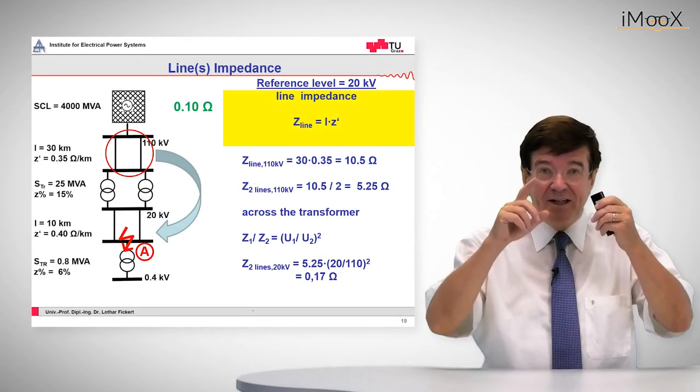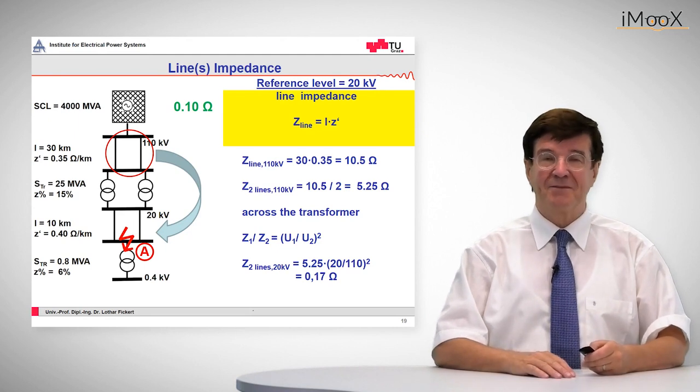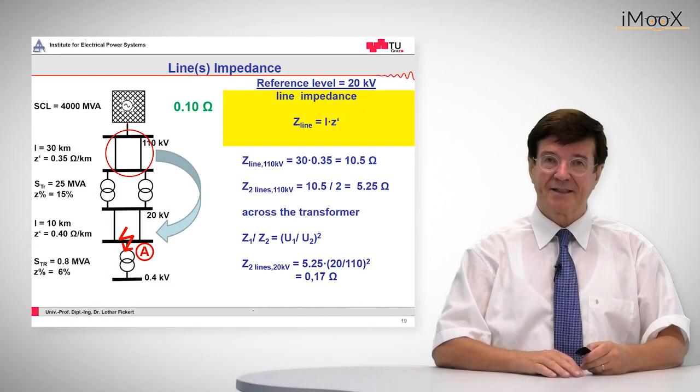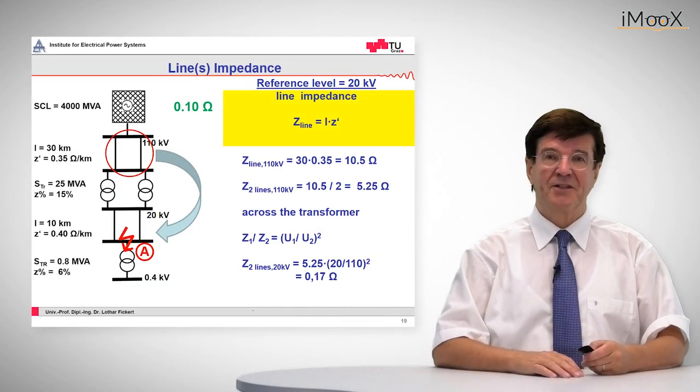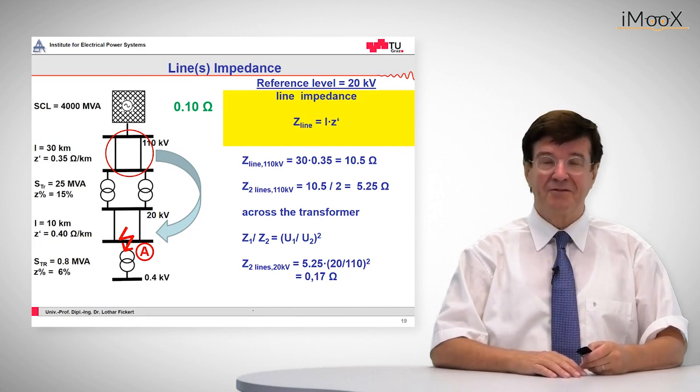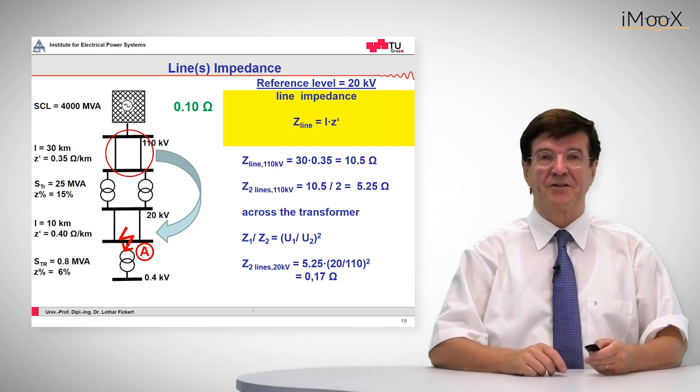So this is the real impedance for these 110 kV lines, but they must be transferred to the 20 kV side of the transformer, and that is done by the square of the voltage ratio. So on the 20 kV side, these 110 kV voltage lines have an apparent impedance of 0.17 ohms.